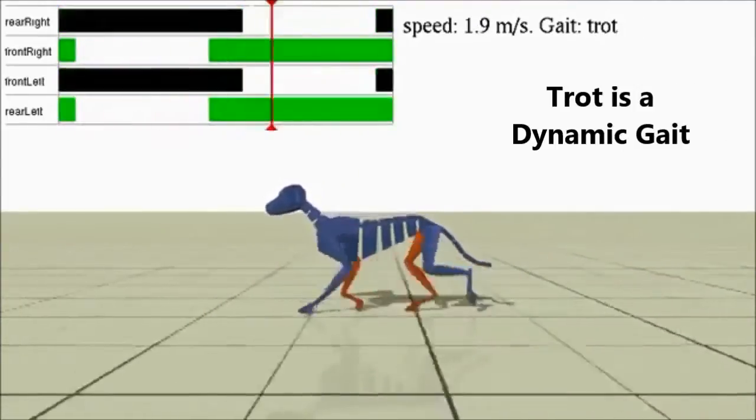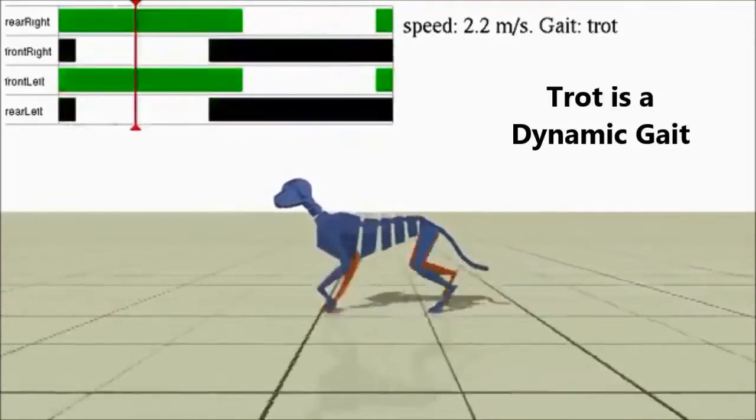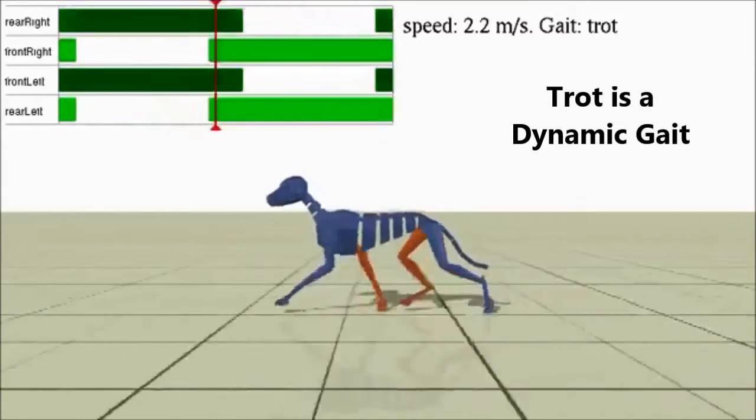The trot is the symmetric two-beat gait that consists of diagonal pairs moving in unison, after which there is a period of suspension where no feet are in contact with the ground. This gait is efficient for mid to long distances.